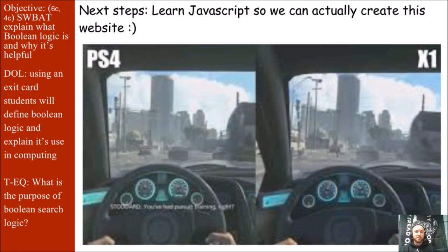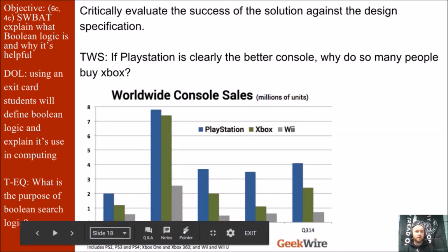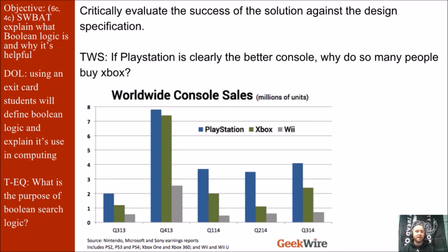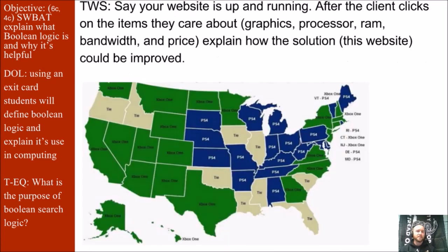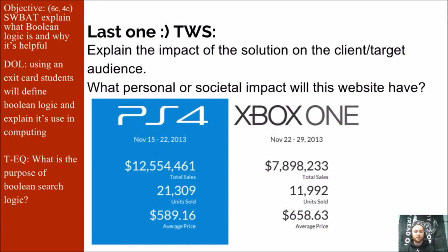Our next steps are to actually learn JavaScript so we can create this website. In the meantime, here are some reflective Think-Write-Shares to wrap up the whole lesson. First, critically evaluate the success of the solution this website offers to people — if PlayStation is clearly the better console, why do so many people buy Xbox? Next, say your website is up and running: after the client clicks on the items they care about — graphics, processor, RAM, bandwidth, and don't forget price — explain how the solution, that is your website, could be improved. Finally, explain the impact of the solution on the client or audience: what personal or societal impact will this website have? This is a website for people to understand and learn more about the hardware of these two gaming systems and then offer them the opportunity to purchase one.